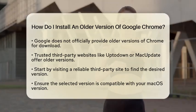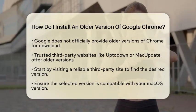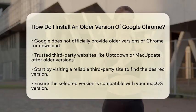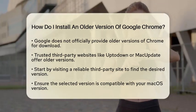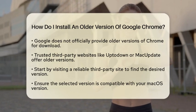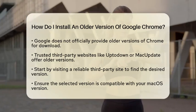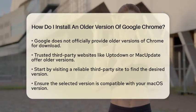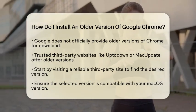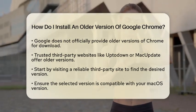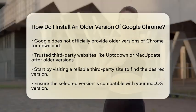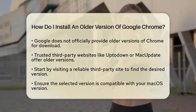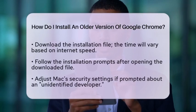Let's break down the steps to install an older version of Google Chrome on your Mac. First, visit a reliable third-party site like UpToDown or MacHupdate. These websites are known for hosting older software versions. Next, look for the specific version of Chrome that you need, and make sure it is compatible with your version of Mac OS. This is a crucial step to avoid any further issues.